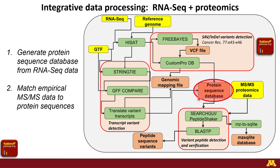The second core component is taking that database and bringing in the tandem mass spectrometry data, using tools to do sequence database searching — matching MS/MS spectra to those putative proteins — so we can directly confirm at the protein level which variant sequences have been expressed. We can then move on to understanding the potential impact of those protein sequences. Those are two core pieces of an overall proteogenomics workflow.